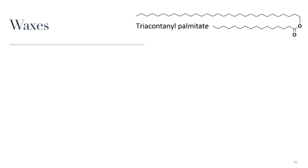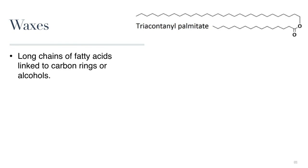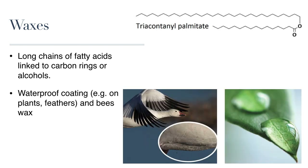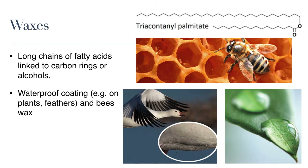Waxes are a long chain of fatty acids attached to either alcohols or hydrocarbon rings. Their main function is to provide a waterproof protective coating for plants and animals that produce them. Waxes can be found on leaves of plants and on the skin, hair, or feathers of animals, where they function to keep these structures pliable and waterproof. One of the best known natural waxes is beeswax, used to make up the structure of a beehive.